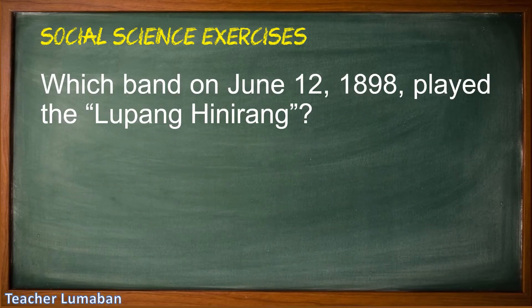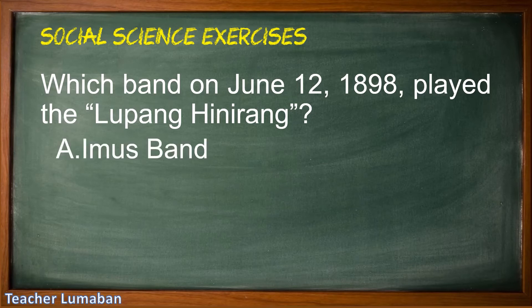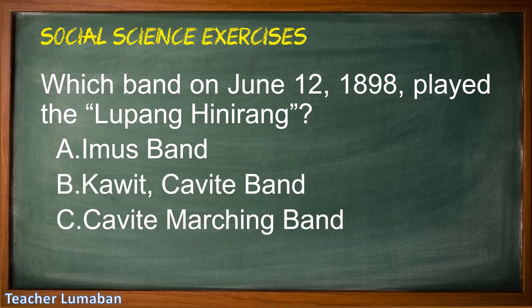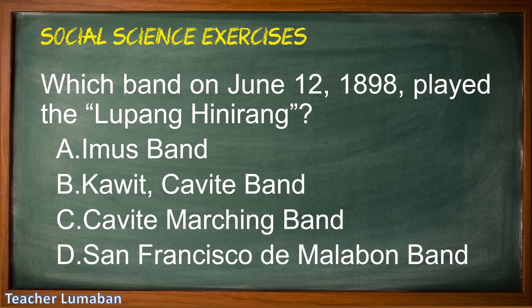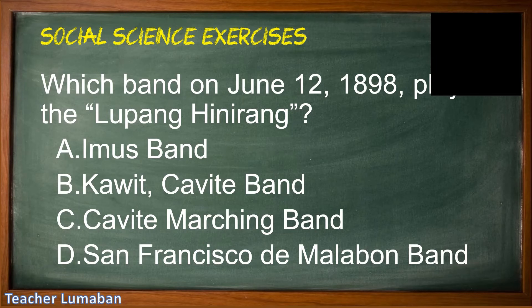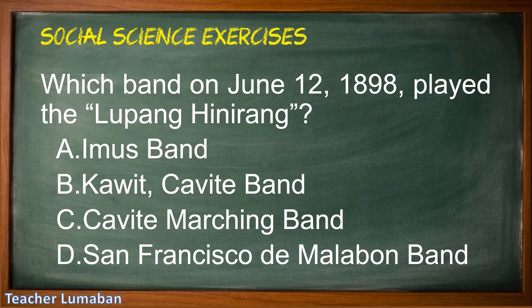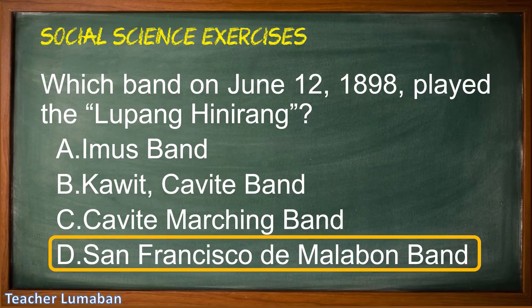Which band on June 12, 1898 played the Lupang Hinirang? Letter A: Imus Band. Letter B: Kawit Band. Letter C: Kawit Marching Band. Letter D: San Francisco de Malabon Band. Please choose the suitable answer in five seconds. Five, four, three, two, one. The correct answer is Letter D: San Francisco de Malabon Band.